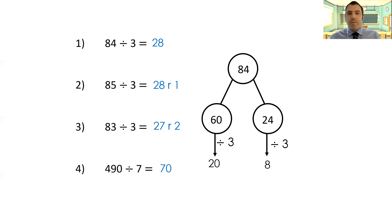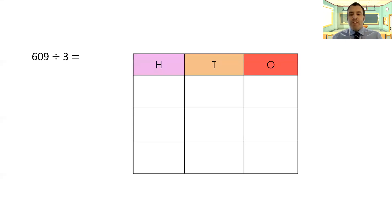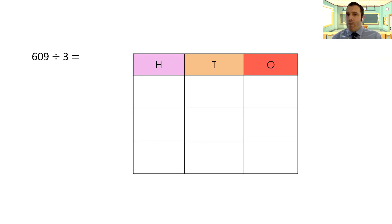So 609 divided by three. The process of using this grid method stays the same — all we're doing is adding an extra column to show that we're using hundreds. We keep the number of rows the same as the number we're dividing by, so I've got three rows because I'm dividing by three. If I was dividing by six or nine, I would have six or nine rows. I've now got three columns because I've got a three-digit number.